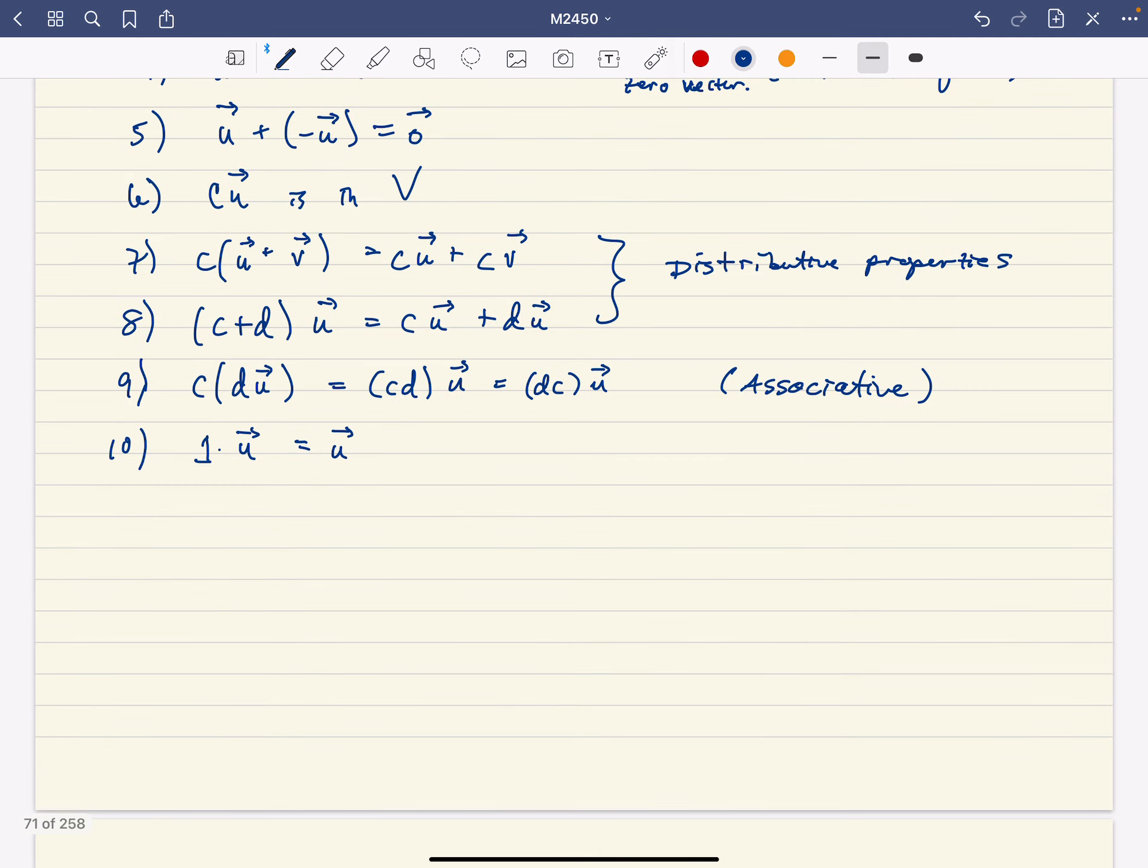And so let's talk about some examples, because I think it's important not to get too lost in the abstractness of our discussion here. First of all, the real numbers themselves are a vector space over the reals. So the real numbers themselves are a vector space. All 10 properties are true.